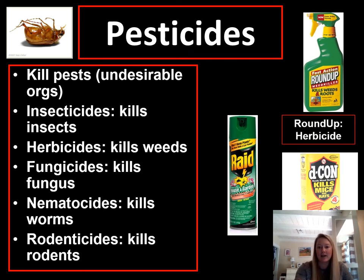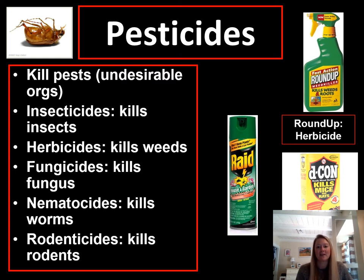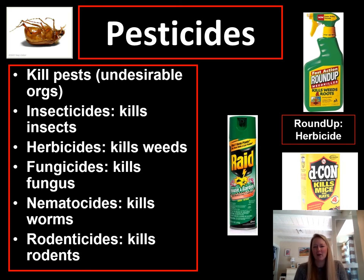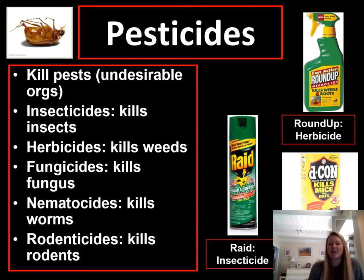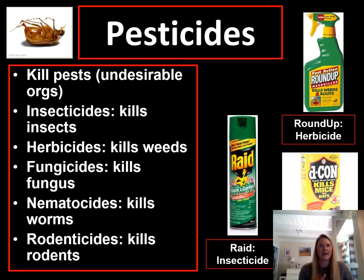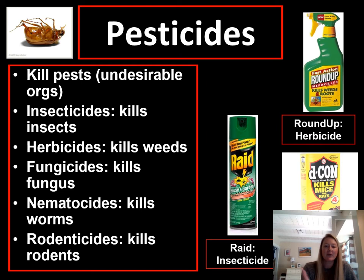For example, Roundup — that's been in the news lately — is a very famous herbicide. A lot of people spray it on their cement, concrete, or bricks to make sure that weeds don't grow in between them. Raid is a very famous insecticide that you usually buy to kill insects around your house. They have ant raid, cockroach raid, and spider raid, all meant to kill bugs. And then lastly, you might have seen Decon, which is a very famous rodenticide — it kills rodents.